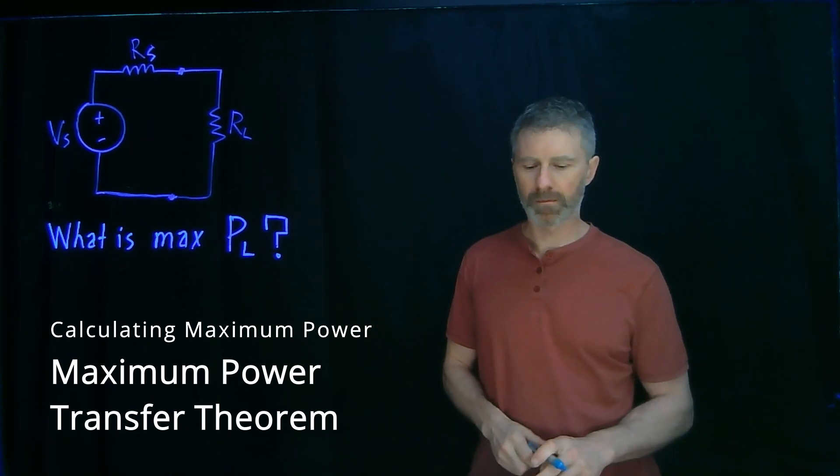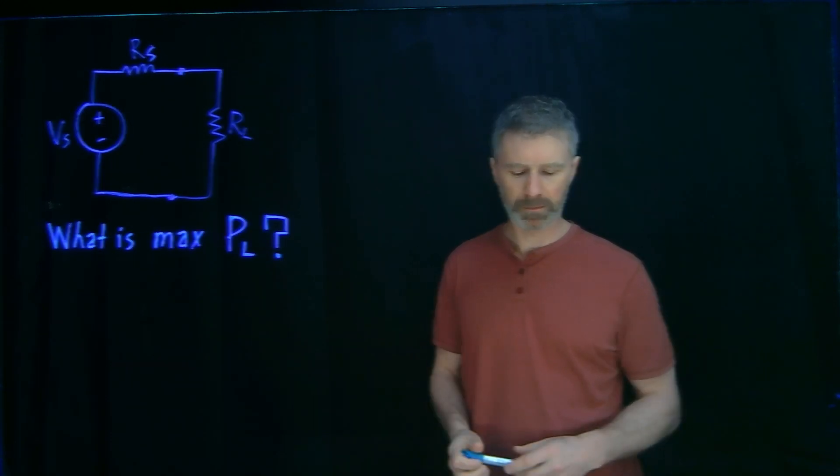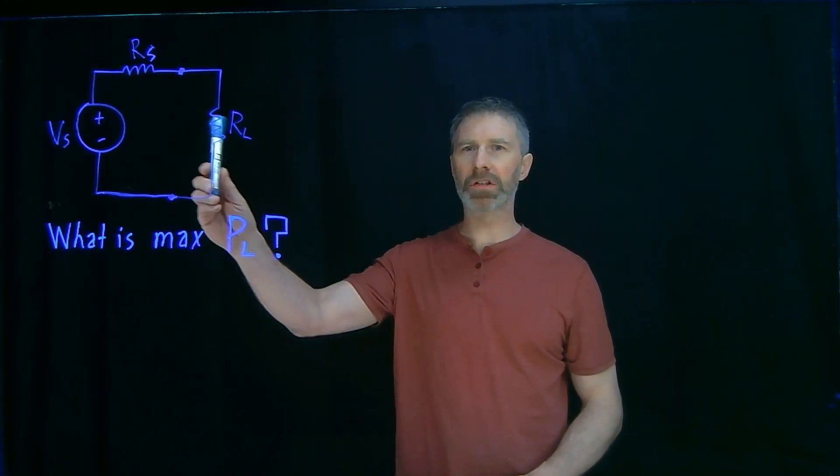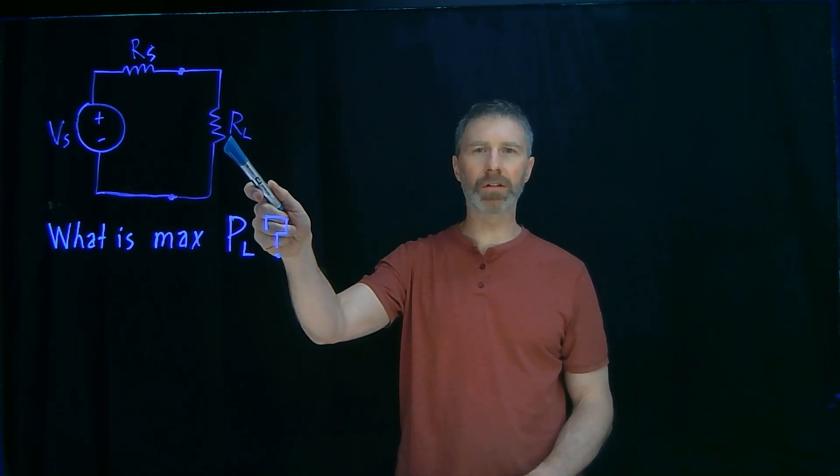This is the Electron X Lab, and in this video I'm going to determine the equation for calculating power when a DC circuit is at its maximum power point. So given a source voltage with an output resistance like this, what is the maximum power that you can give to the load?